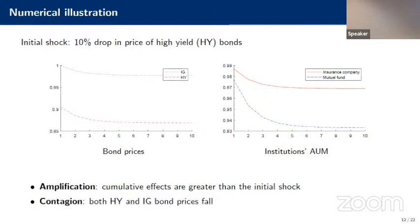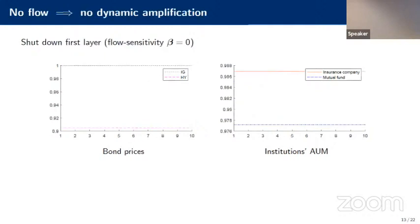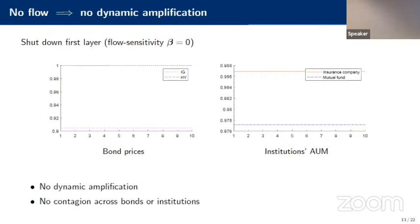There's also a contagion effect because these mutual funds don't just hold high yield bonds — they also hold investment grade bonds in a fixed proportion. So they sell some investment grade bonds too, affecting investment grade prices. That's the cross-asset contagion. And because insurance companies primarily hold investment grade bonds, you also get cross-institution contagion. If we shut down the first layer — essentially setting beta to zero — we see the initial price drop but no dynamic amplification or contagion effects across assets or institutions.